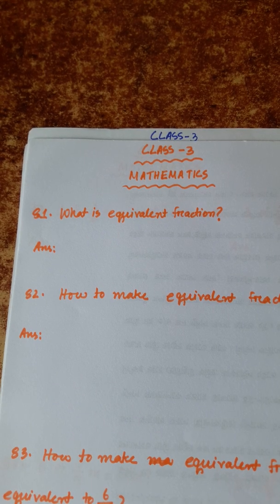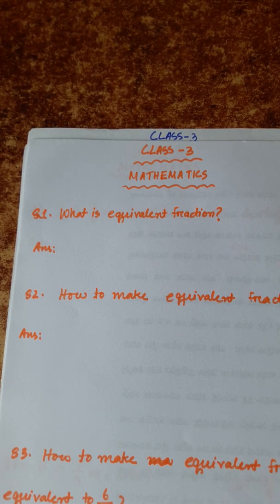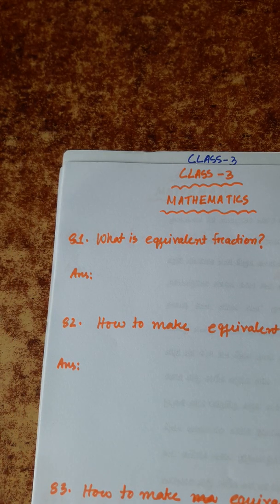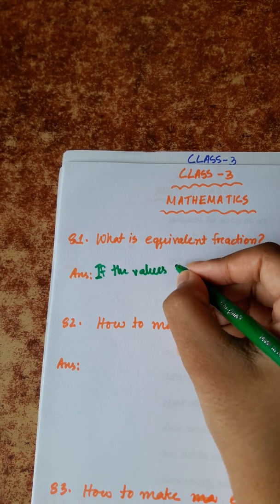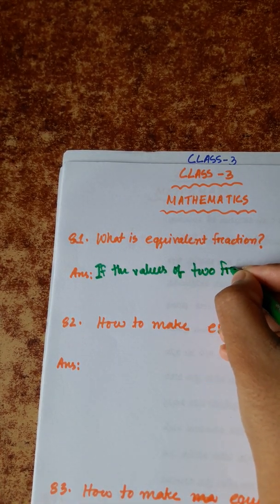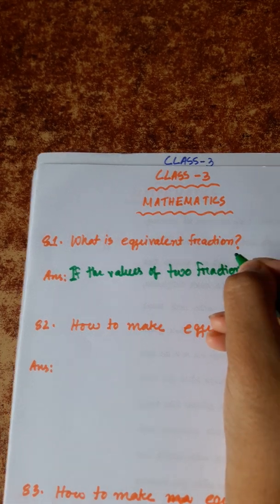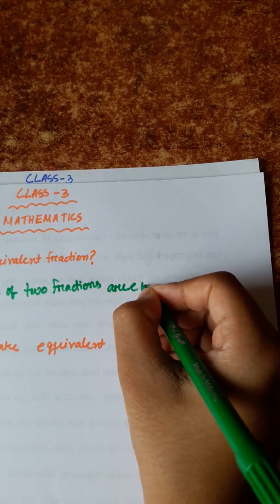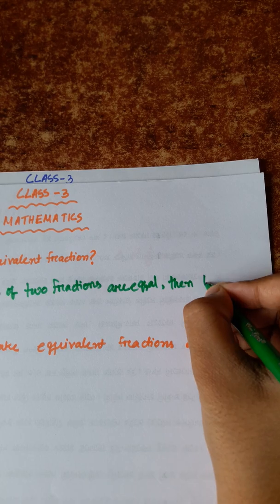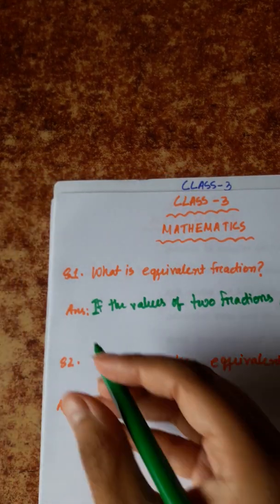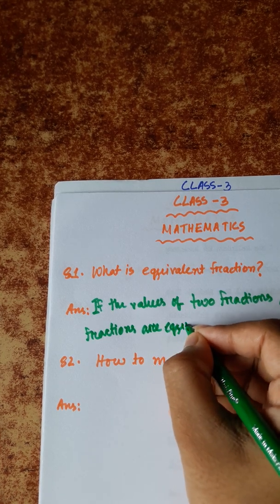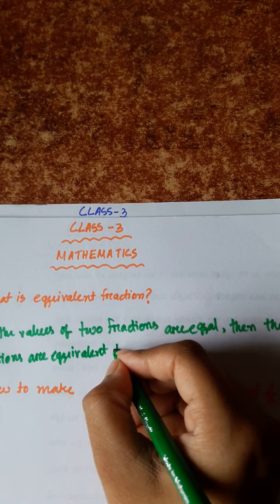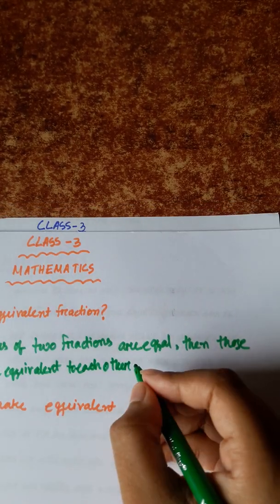Number 81: What is an equivalent fraction? If the values of two fractions are equal, those two fractions are known as equivalent fractions. Those fractions are equivalent to each other and known as equivalent fractions.